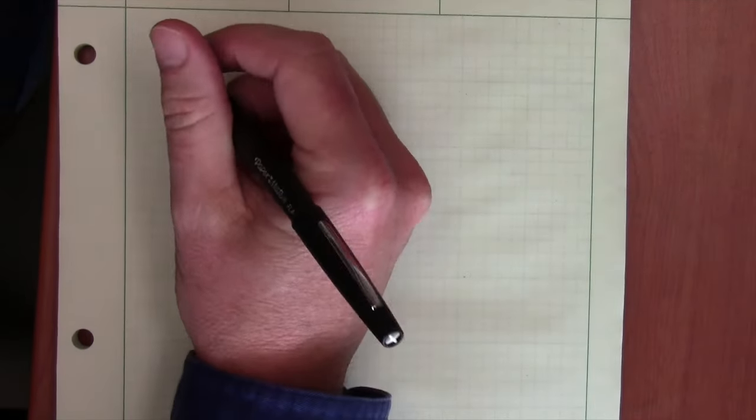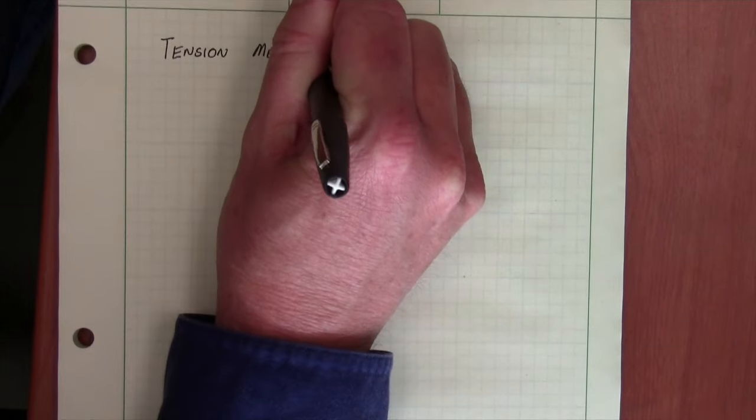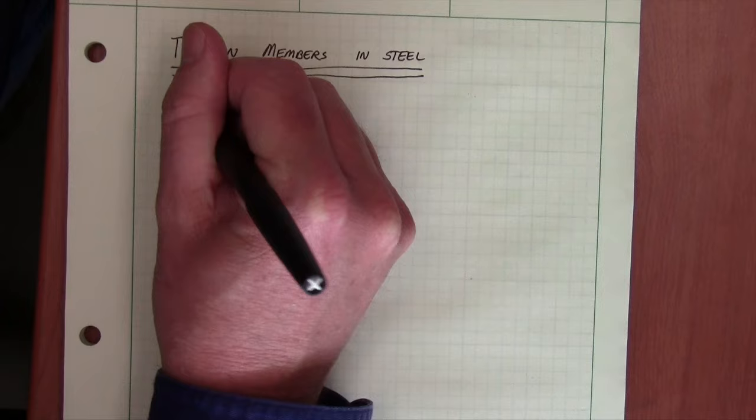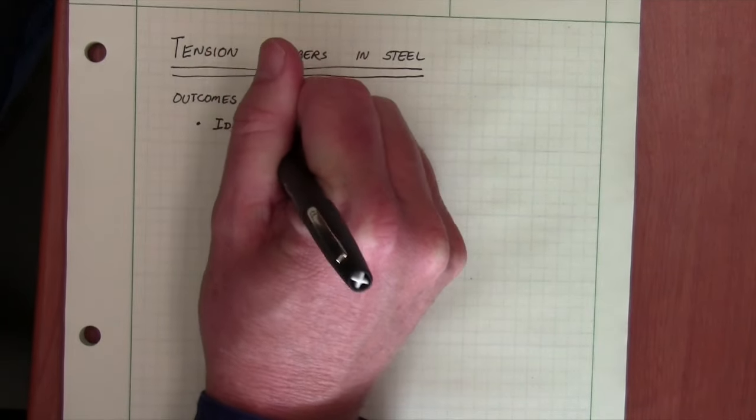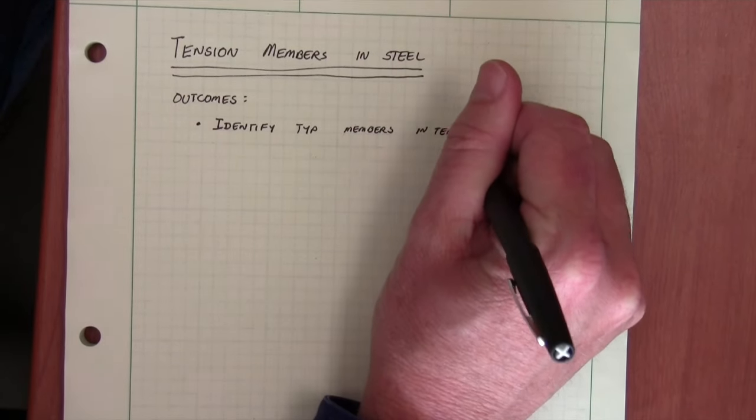This session is on tension members in structural steel and there are several outcomes we'd like to achieve. First, we'd like to identify typical members in steel and some typical applications that occur in practice.